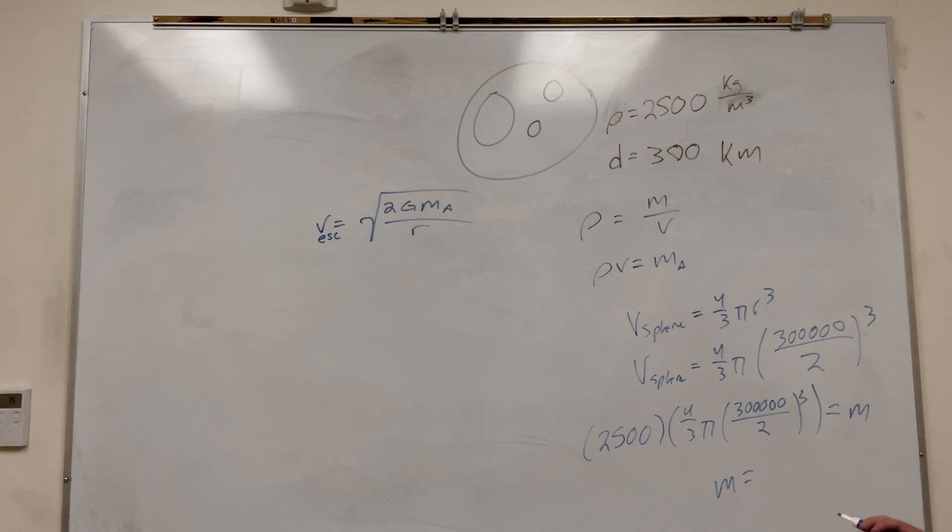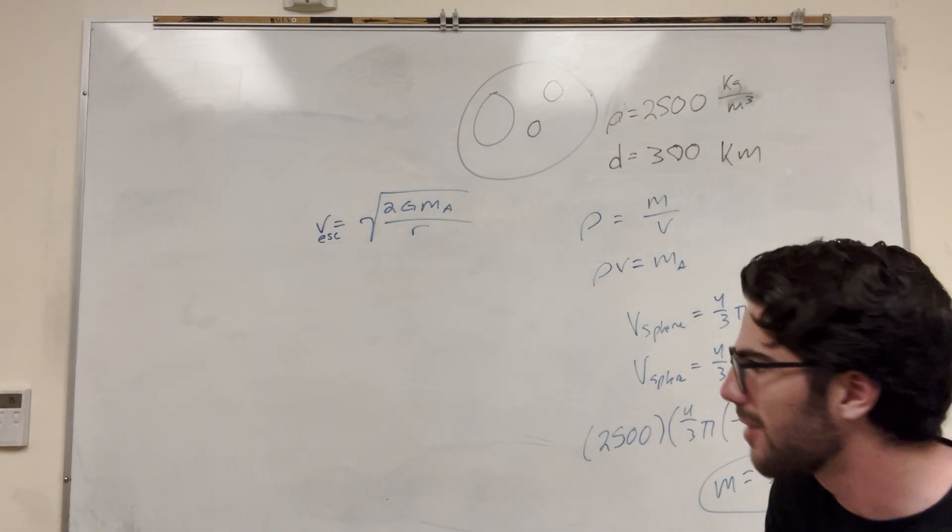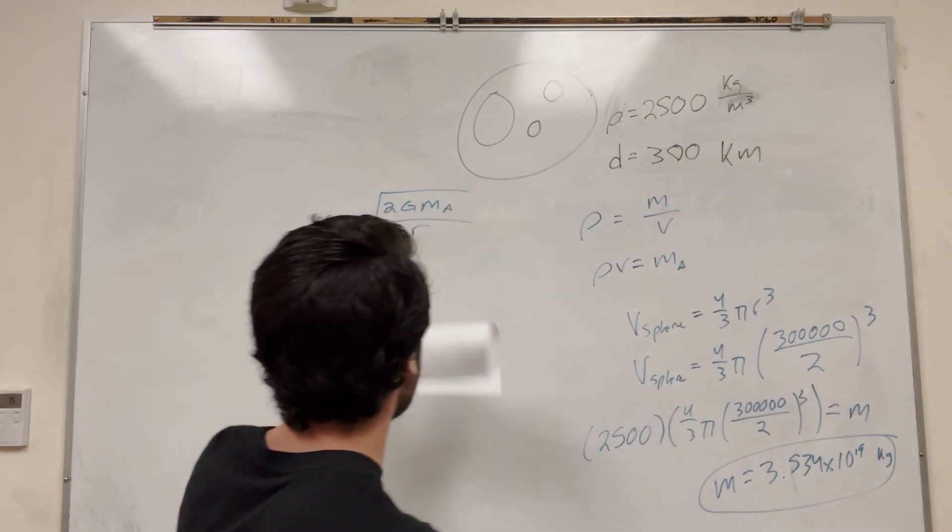So if you calculate this, you're going to get mass equals 3.534 times 10 to the 19 kilograms. That's a lot of weight, but it makes sense because our asteroid is pretty big and pretty dense. So we have mass, we have everything we need for this.